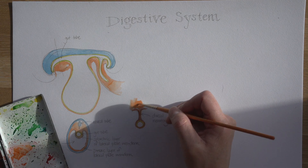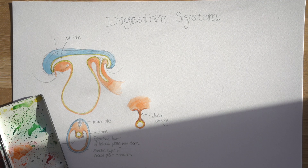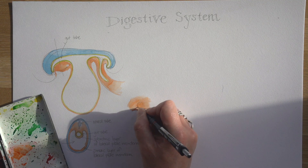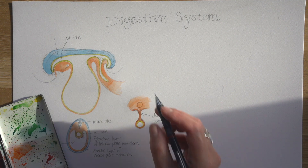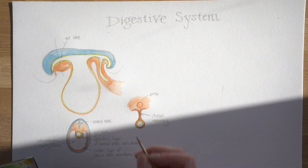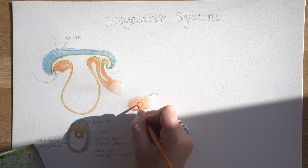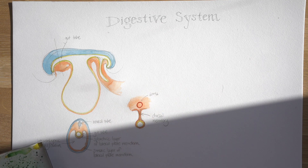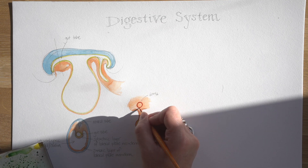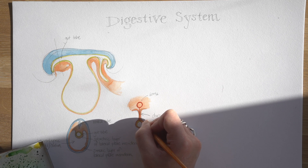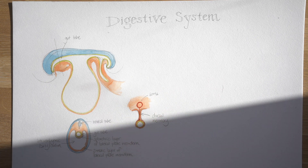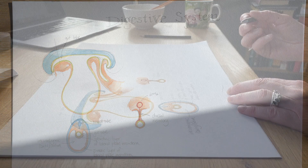Now, something else is happening in the mesoderm: we've got blood vessels forming. Here is the aorta, and a branch from the aorta will travel forwards — ventrally — to supply the gut tube. So this is how the blood vessels get from the aorta to the gut tube: they travel through that mediating mesentery.